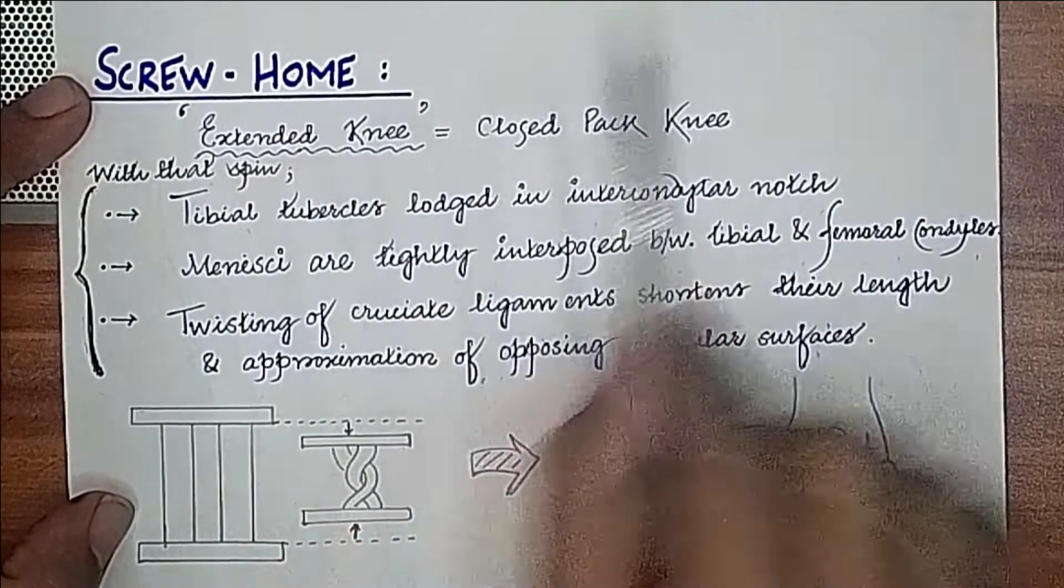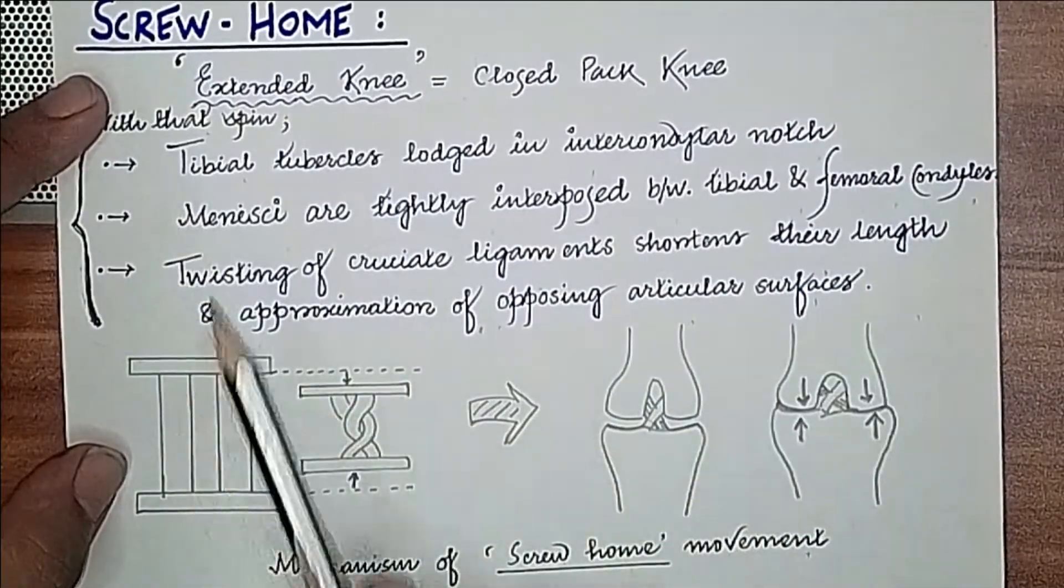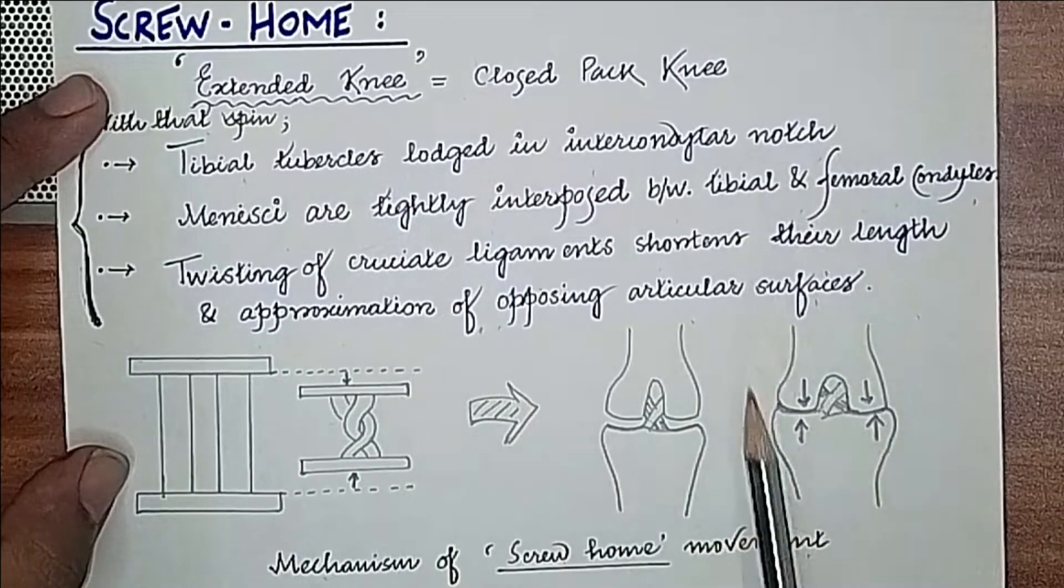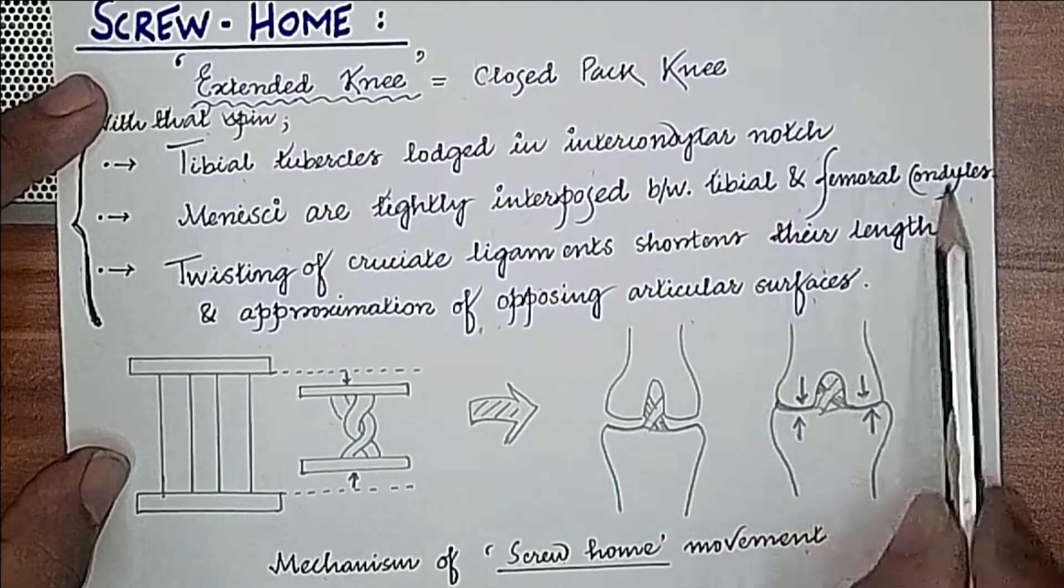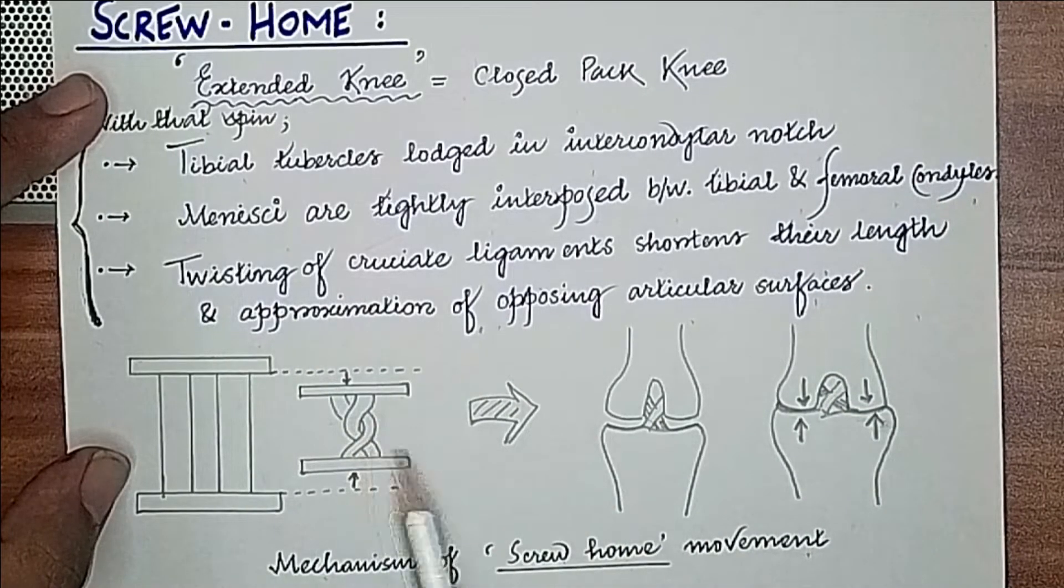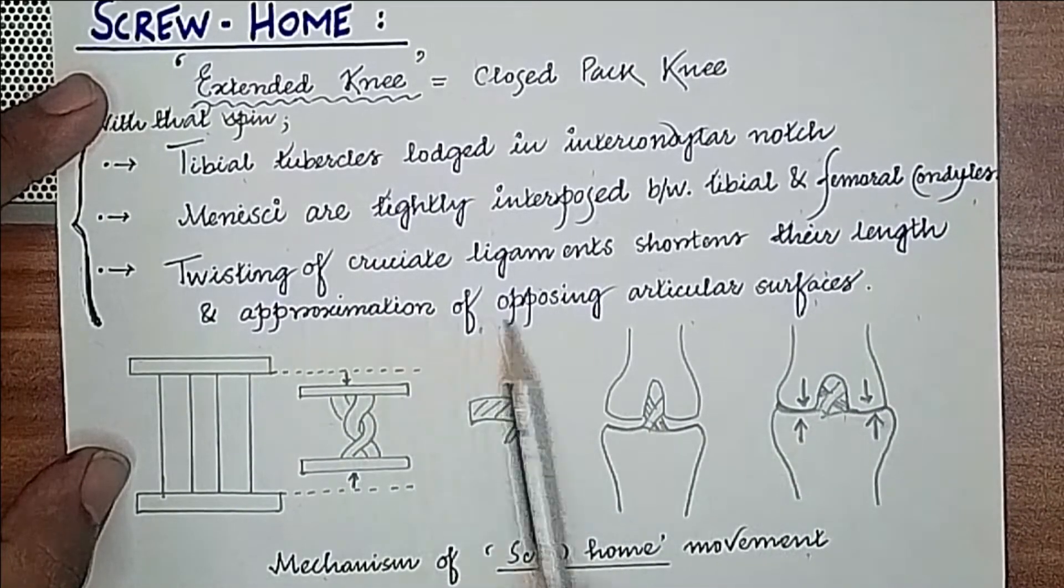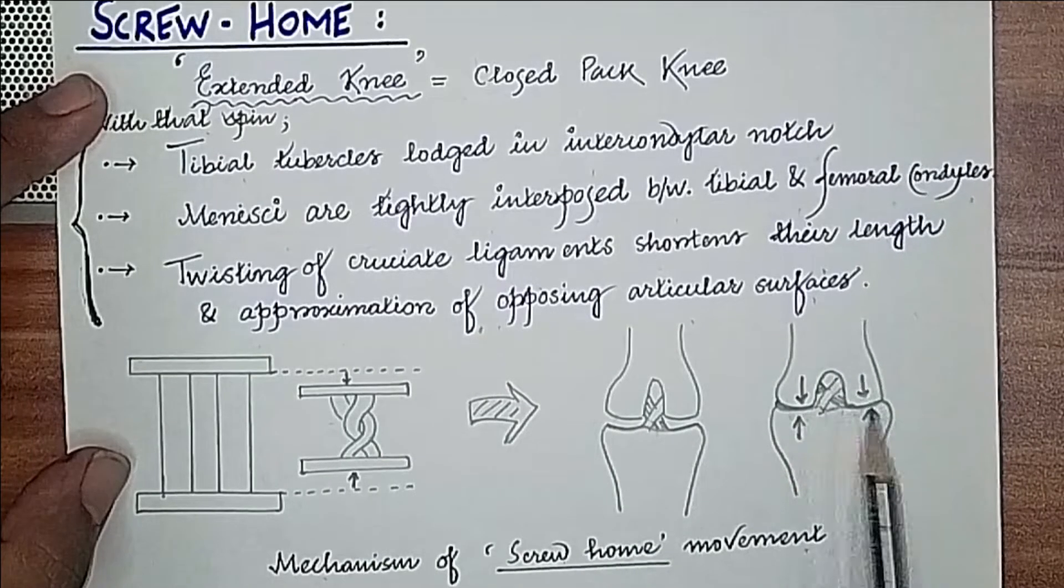At extended knee with that spin, three things happen. First, the tibial tubercles lodge in the intercondylar notch. Menisci are tightly interposed between tibial and femoral condyles. Twisting of cruciate ligaments shortens their length and approximates the opposing articular surfaces.